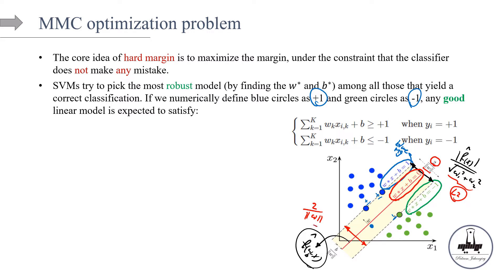In order to maximize this gap, this is equivalent to minimizing any monotone function of W. If I minimize W, it's as if I'm maximizing 2/||W||. That's the first key point. The second: all blue circles (labeled +1) to the left of the hyperplane should have a distance larger than 1. Mathematically, if y = +1, then WX + B ≥ +1. For green circles (labeled -1) on the right side, the distance should be less than -1, i.e., WX + B ≤ -1.